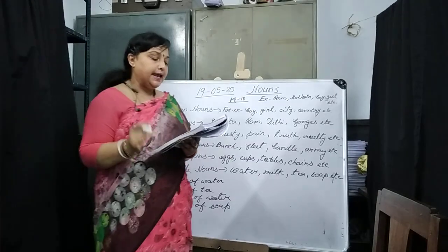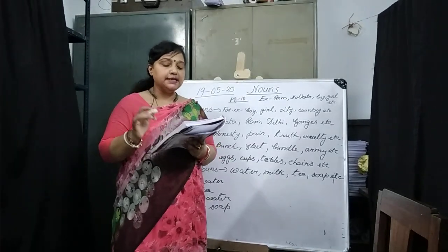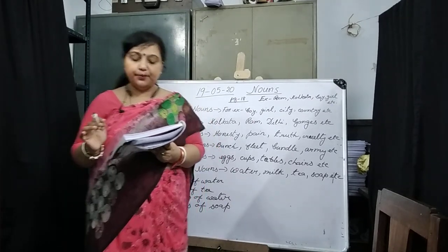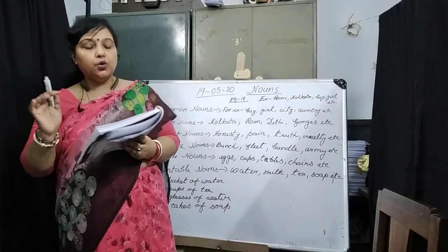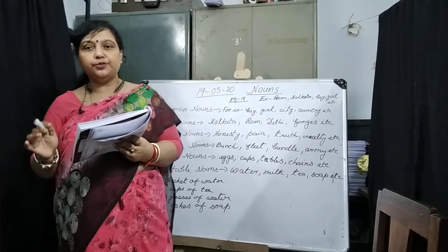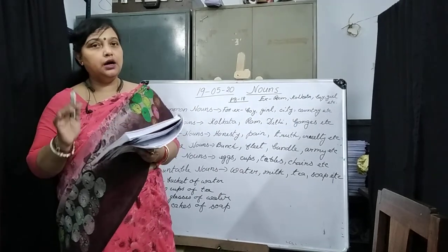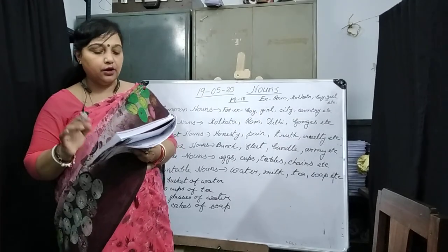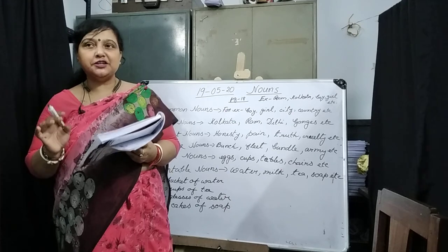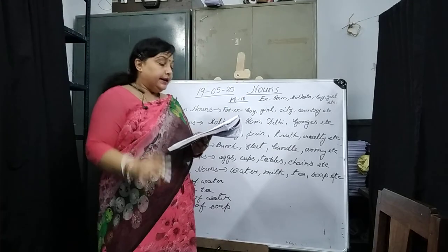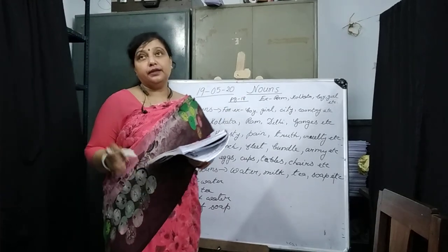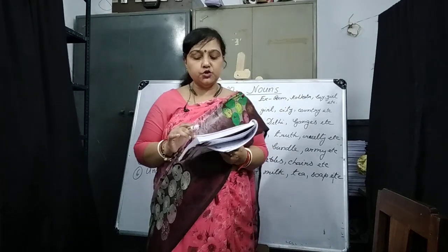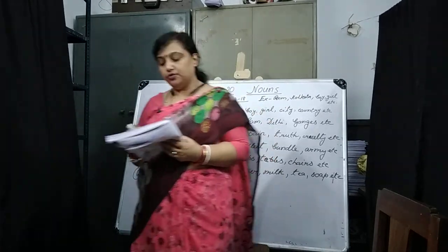Number 10: 'Arun will visit Kolkata in October.' Arun is the proper noun, Kolkata is another proper noun, and October is also a proper noun — all are written with capital letters and are special names. Now, exercise B: match the common nouns with groups of proper nouns.